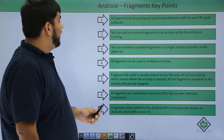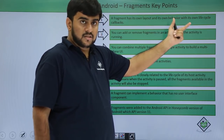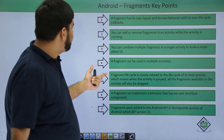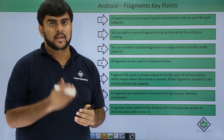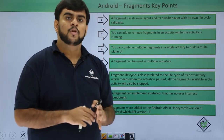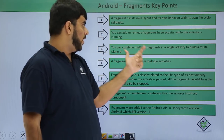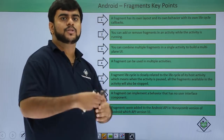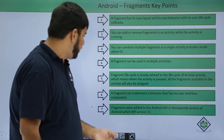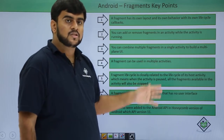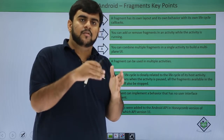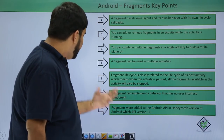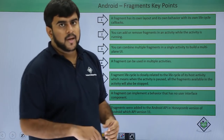Now let's look at the properties of fragments. A fragment has its own layout and its behavior is available within its own life cycle. You can add or remove fragments in an activity while the activity is running. Whenever you are changing or replacing fragments, you need to commit your changes through the fragment transaction manager, otherwise you won't see them in your UI. You can have multiple fragments in a single activity, and a fragment can be used in multiple activities. The fragment life cycle is related to the host activity — when the activity is paused, all fragments are also stopped. A fragment can implement behavior with no user interface. Fragments were introduced in API level 11, the Honeycomb version.